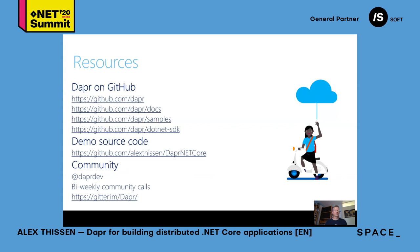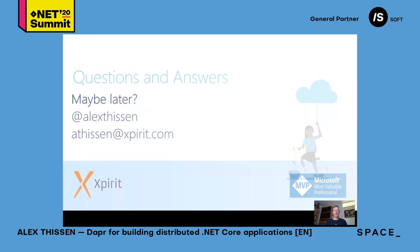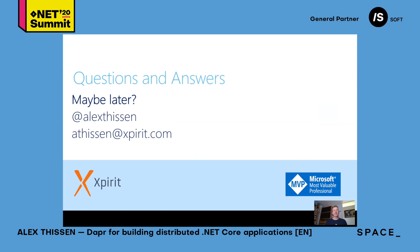The source code is on GitHub — the original implementation, documentation, samples, and the .NET Core SDK code. The demo code is also available on GitHub. You can get in touch with the community and the DAPR team via the Twitter tag DaprDev or join the biweekly community calls for end-of-sprint reviews. If you have any questions, you can ask them in the Q&A session following shortly, or contact me at Alex Thyssen on Twitter or at thyssen@experit.com. Thanks very much for your attention, have a lovely rest of the conference, and I hope to see you in the Q&A session. Bye for now.